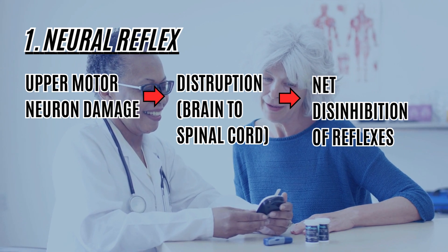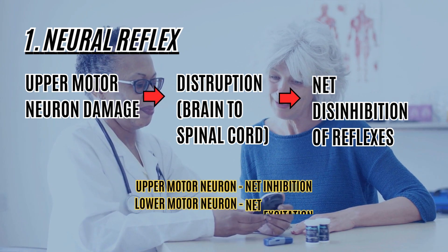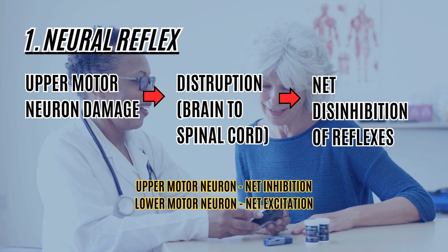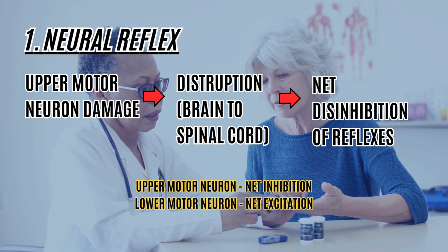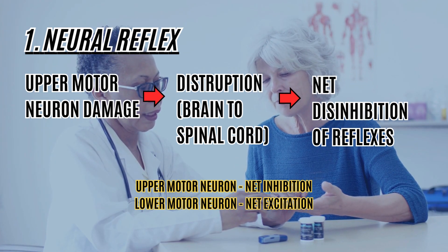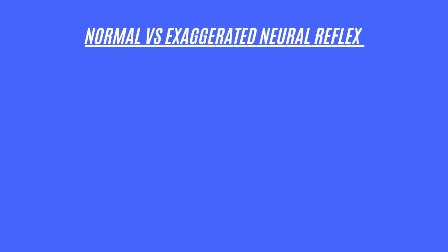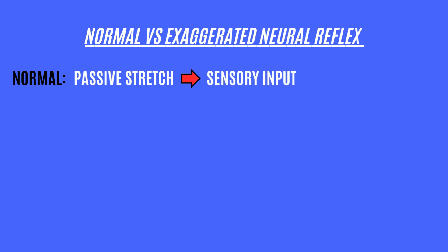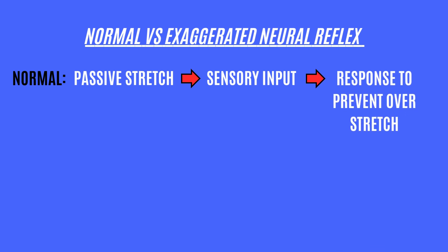Just to recap, the upper motor neuron usually has a net inhibitory effect and the lower motor neuron has a net excitatory effect. For a normal stretch reflex, when a passive stretch is happening, there will be sensory input from the muscle spindles in the muscle unit, and this will cause the alpha motor neurons to be activated and they will trigger a counter response to prevent the overstretching.